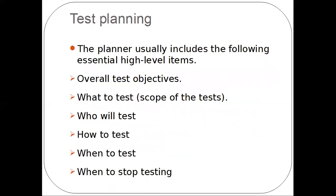Test planning is a difficult task and also involves implementing detailed documents. We can have higher level items. These higher level items are: overall test objectives, what to test, who will test, how to do the test, when to test, and when to stop testing. The purpose of testing and what we can get from testing will be mentioned in the test objectives.